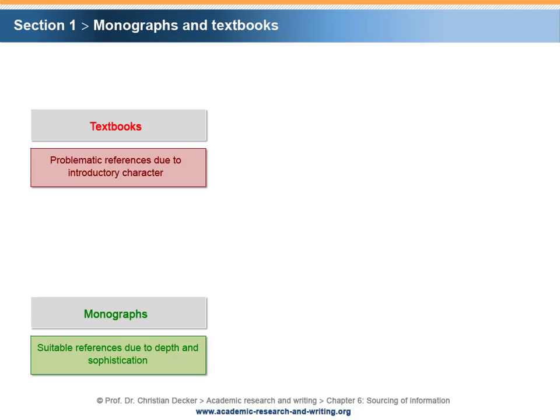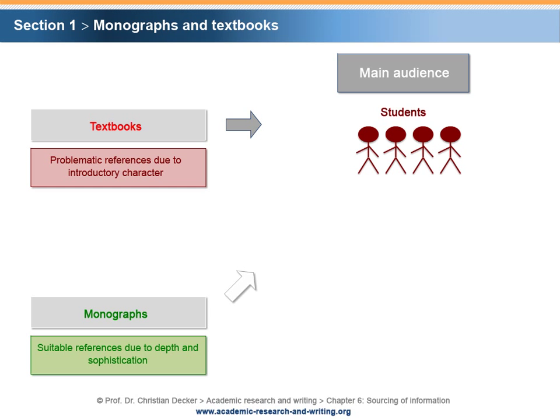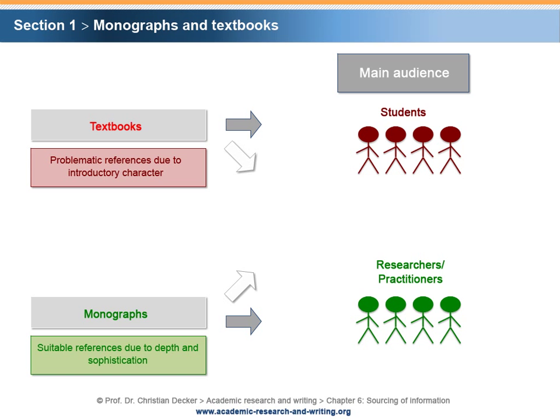In some cases, textbooks are referred to as monographs as well. However, a textbook can be distinguished from a monograph in terms of its audience. The target group of textbooks are students or beginners in the field of study. In contrast, a monograph aims predominantly at experienced academics and researchers as well as advanced practitioners.